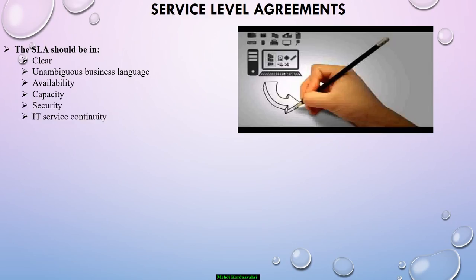The SLA should cover aspects such as availability, capacity, security, and IT service continuity. Gone are the days when the IT department deliberately included vague targets so that it could tweak the reports to make things look good, or when you could inherit SLAs and continue with them without any understanding of whether they were achievable or not.